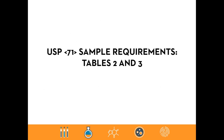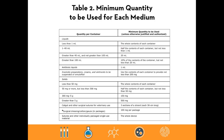USP 71 sample requirements are defined in tables two and three. Table two specifies the minimum quantity to be used out of a container for each media — keep in mind both media must be inoculated for a valid USP 71 test. The left column shows the amount per container, and the right column shows the minimum quantity to use from each container to inoculate each media, so those volumes are effectively doubled when the actual test is conducted.